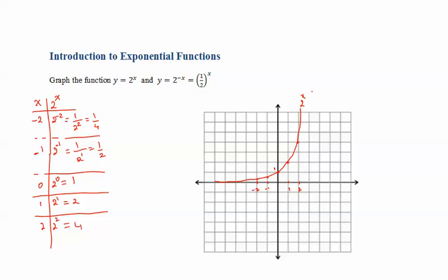Notice how quickly the value of this function grows. For example, f of 3 will be equal to 2 to the power of 3, which is 8. And f of 30 — 2 to the power of 30 is equal to 1,073,741,824. So look how quickly this number grows.